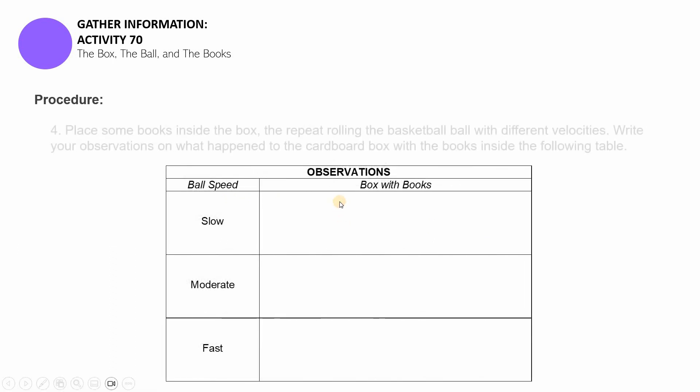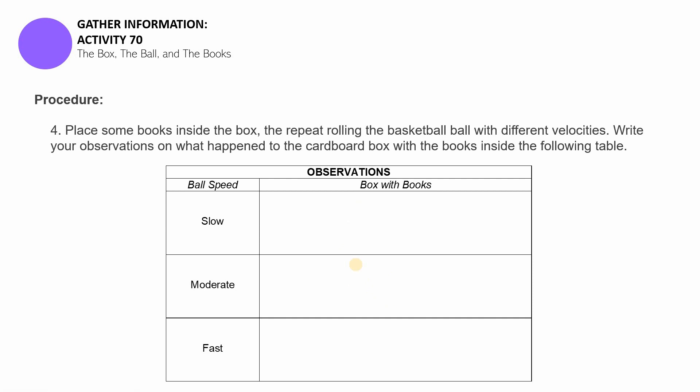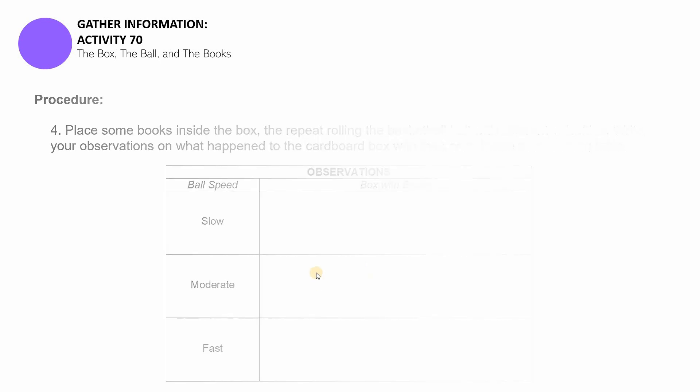If you need more time, you can pause this video. But, if you're ready for the next part of this, for the next step, let's now deal with step number four. You'll be placing books inside the box and basically repeat the whole process, rolling the ball slowly, moderately, and fast. And then, you're gonna be recording your observations here in this table.